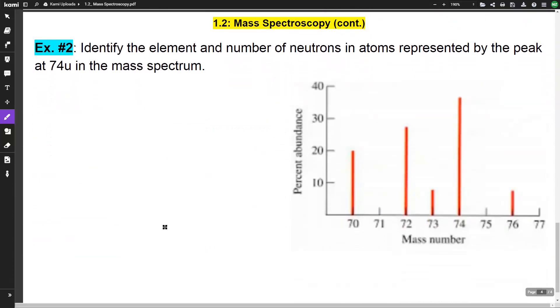Let's take a look at another example. It says identify the element and the number of neutrons in the atom represented by the peak at 74 atomic mass units in the spectrum. So we're going to kind of do the same thing here. We've got five peaks. And if you look, 74 is what it's asking us about. So it's not actually asking us for the average atomic mass here. It's just asking us to figure out what element it is.